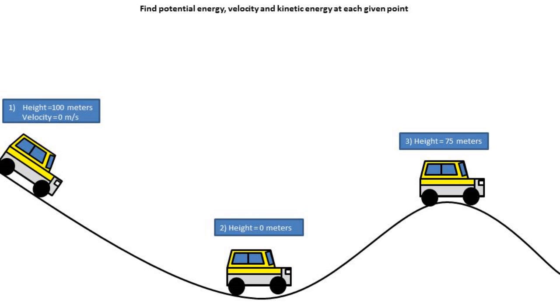In this video, we will be solving for potential energy, velocity, and kinetic energy at three points along the car's path. This will be assuming that the car has been left to coast down the hill and that there is no air resistance or friction.